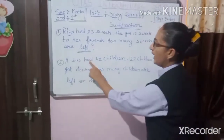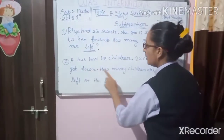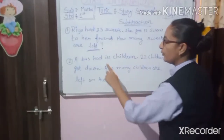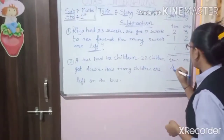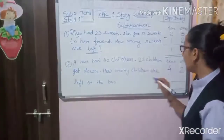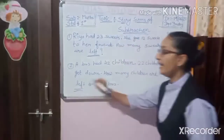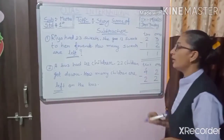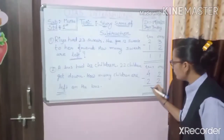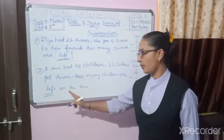Number 2: A bus had 42 children. 22 children got down. How many children are left on the bus? So first of all, what we have to write here? 42 — 4 tens, 2 ones. And 22 — which word will come here? Left. So what we have to do? Minus. 2 minus 2 is 0, and 4 minus 2 is 2. So there are 20 children left on the bus.